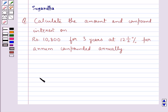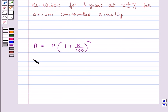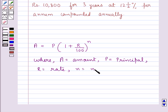Now let's consider the formula. A equals P multiplied by 1 plus R upon 100 whole to the power n, where A is the amount, P is the principal, R is the rate, N is the number of years.